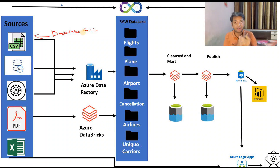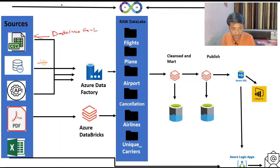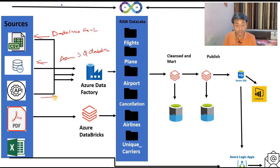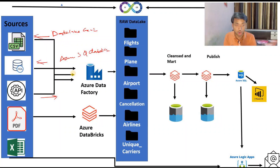First we have to extract those zipped files and then load them. Then we have SQLite - here we will be having some tables which are stored in the Azure SQL database. And then we have APIs - the API is hosted on cloud, so we will be fetching those records from the API. All these three things will be copied using the copy activity in Azure Data Factory.